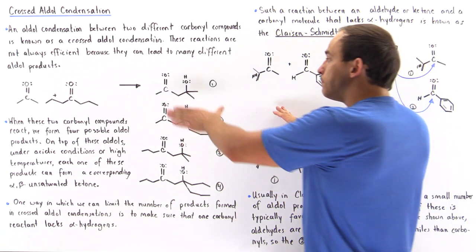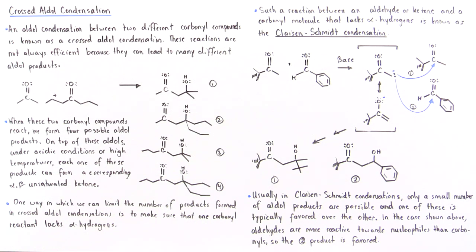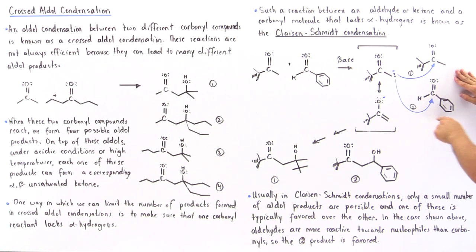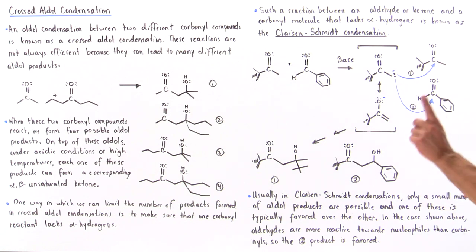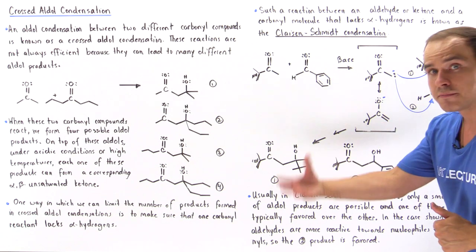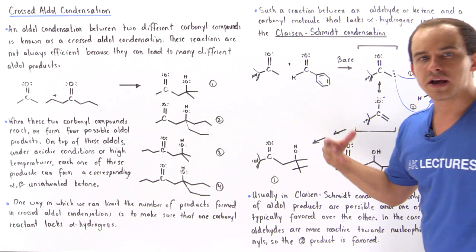So instead of having a possibility of four or more different types of products, in this case we only have two different possibilities. Notice that the nucleophile interacts with the ketone in one case and with the aldehyde in the other. We know that when our nucleophile interacts with an aldehyde, the equilibrium constant will be higher for the aldehyde case than for the ketone case. That means the reaction pathway involving the aldehyde will produce more product, so product two will be the predominant product.